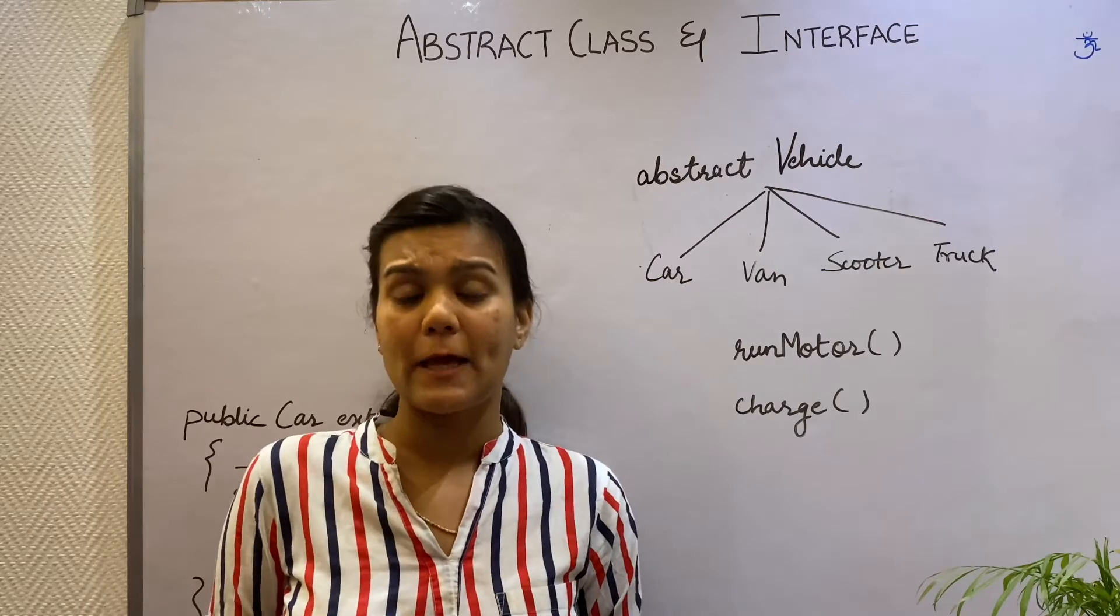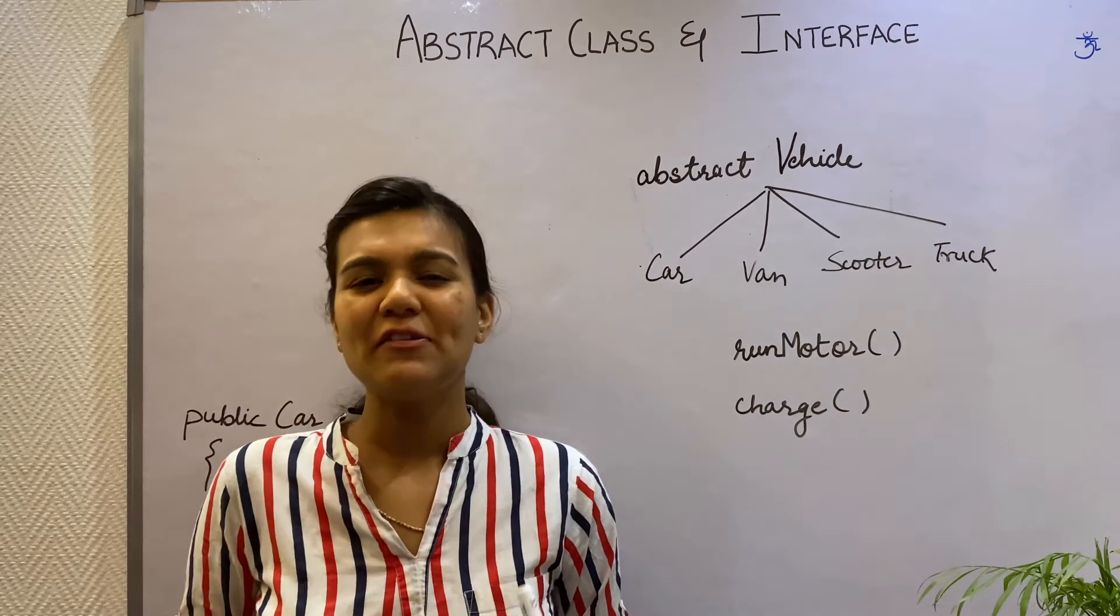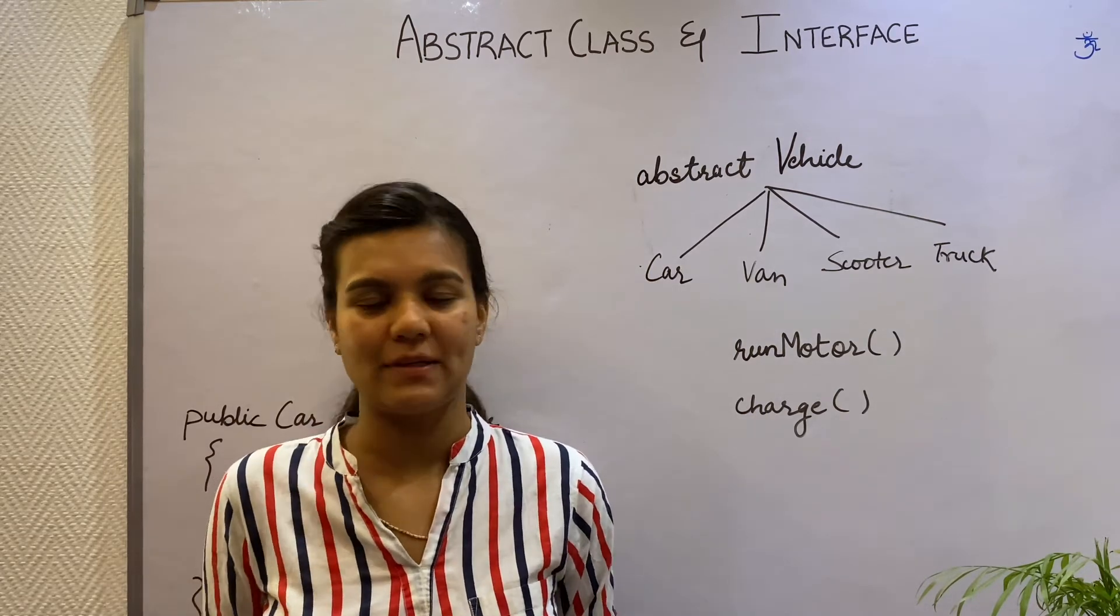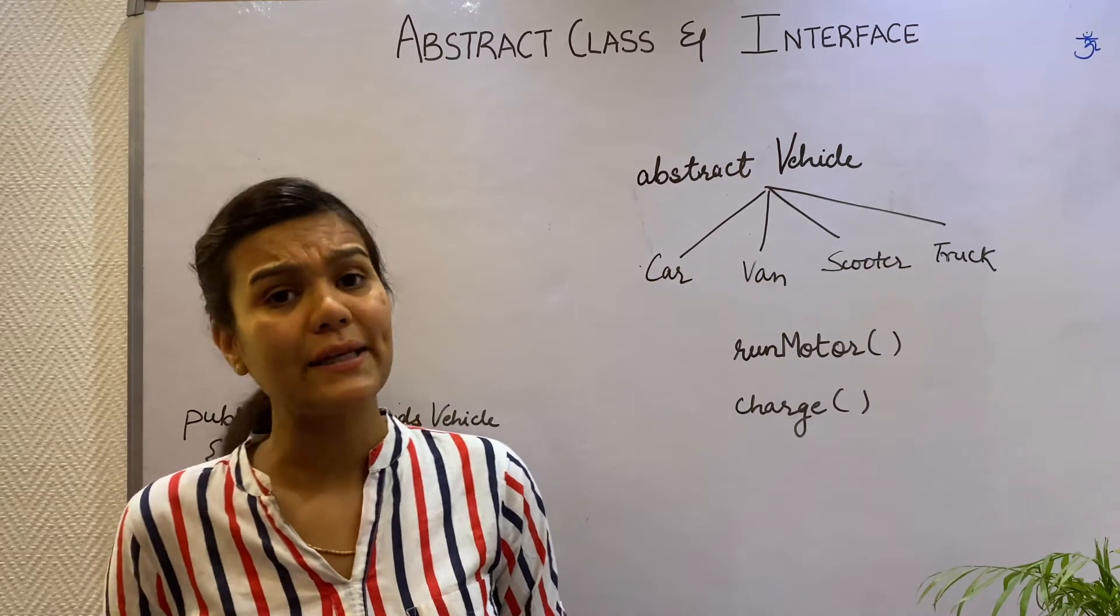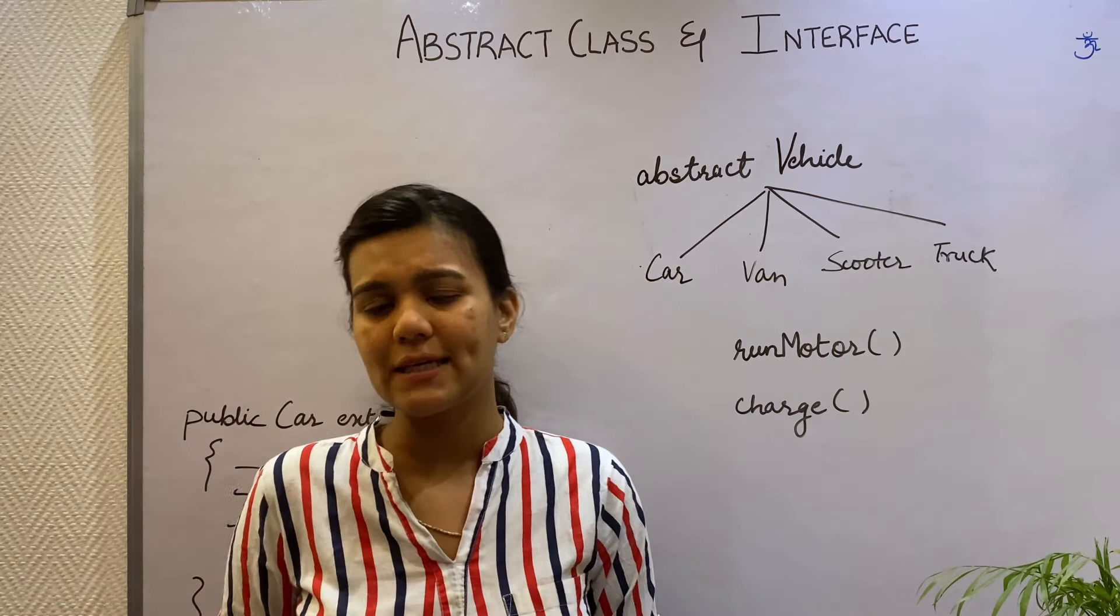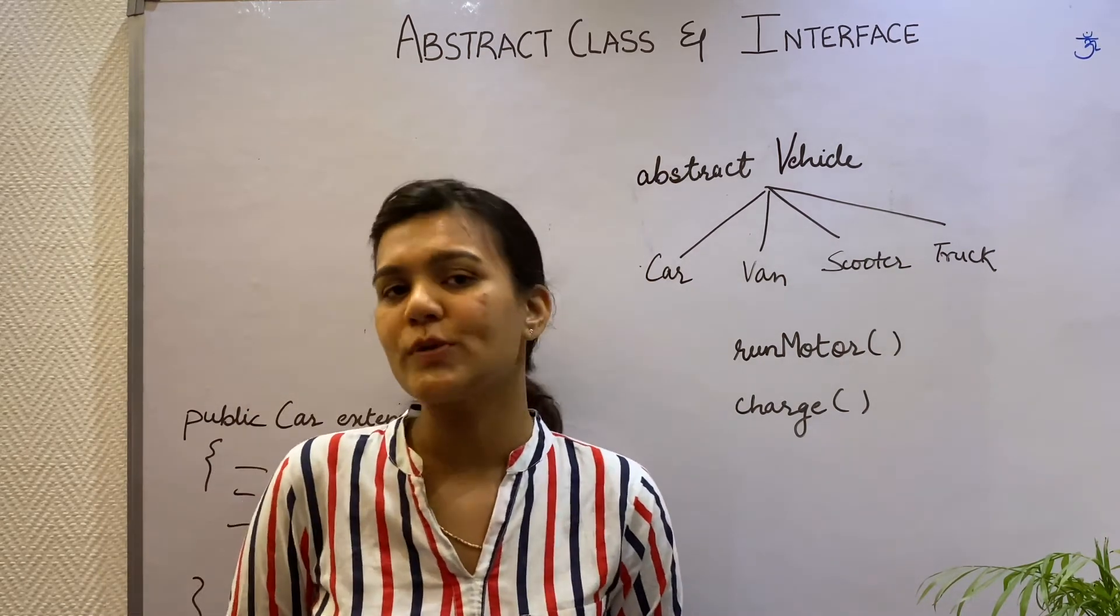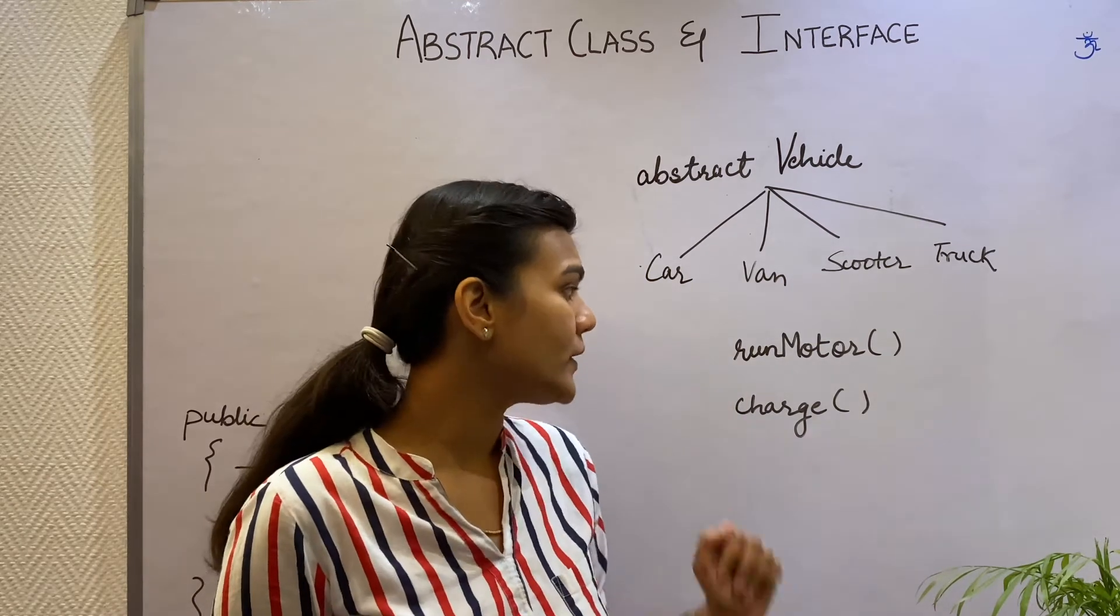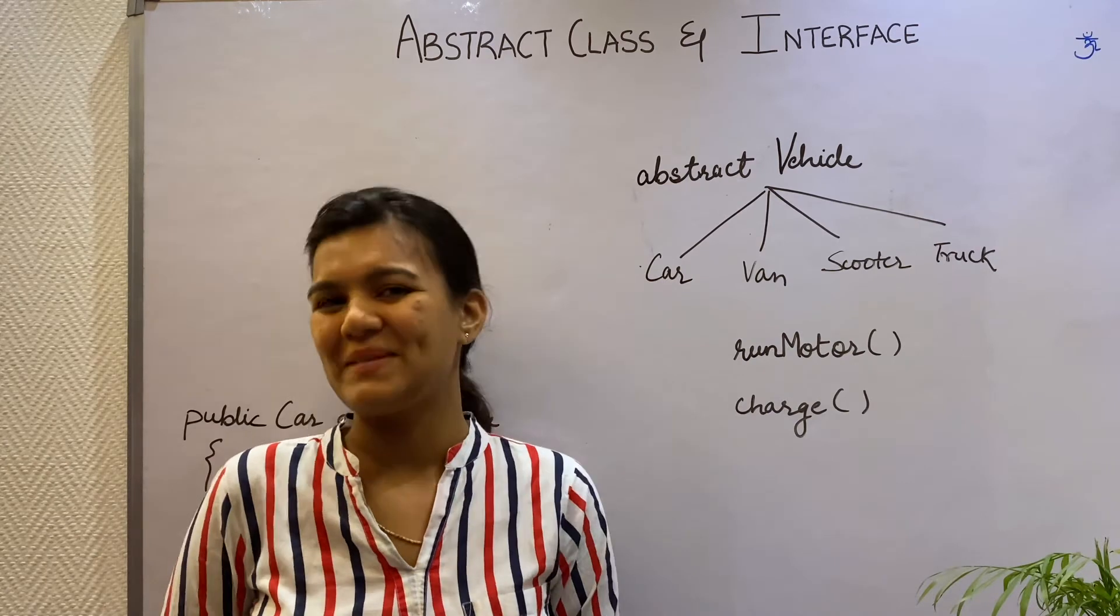Now let's take abstraction to the next level and discuss interfaces. We'll first understand this with an example, a scenario actually. Quite a few of us have started using electric cars these days. Electric cars do not have engines. Instead they have batteries that get charged and run motors. So electric cars would have methods like run motor and charge.